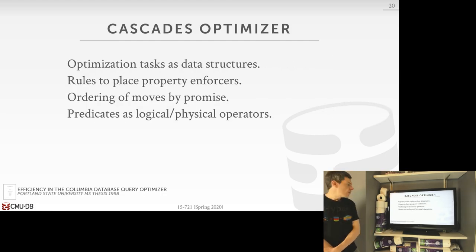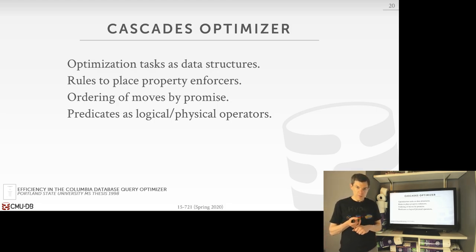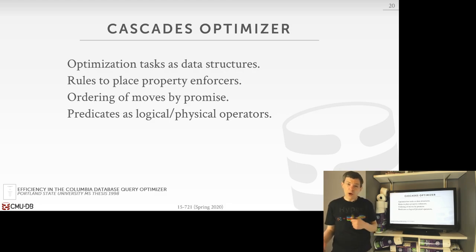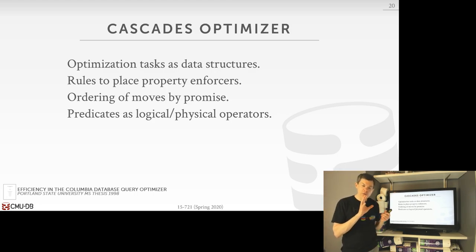For Cascades, there are four main design ideas. First, all optimizations are simple pair data structures containing the pattern you want to match in your query plan, and a rule to fire if it matches, to do some kind of transformation. This contrasts with the heuristic-based approach in Postgres and other systems that use bunches of if-then-else statements. In Cascades, it's always these rules — a pattern, then a transformation rule — and this works identically for logical-to-logical and logical-to-physical transformations.